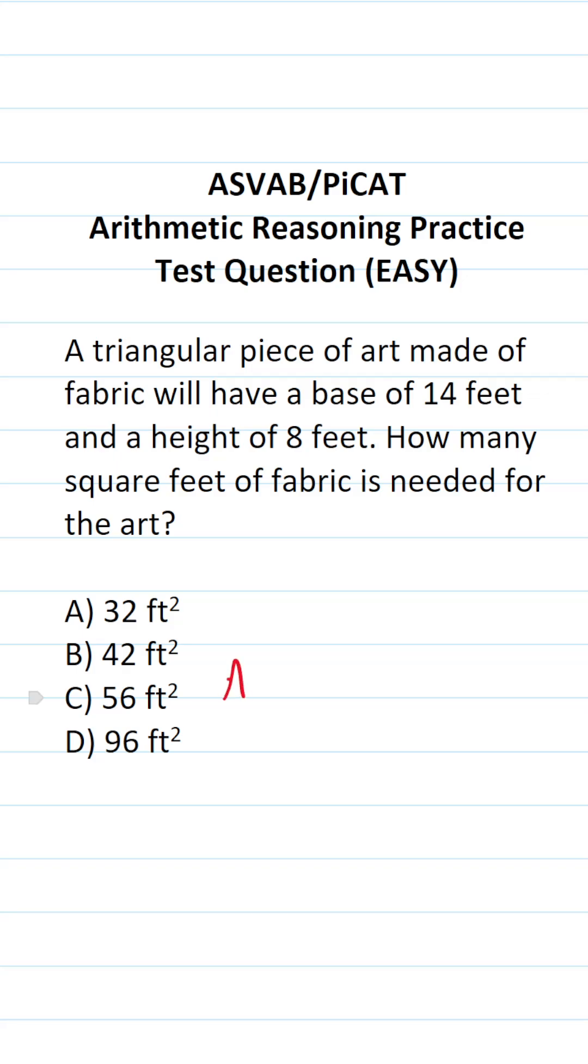In this case, we're being asked to find the area of a triangle, and that formula is simply one half base times height. Now, we weren't told what type of triangle we were looking at. That said, the formula to find the area of a triangle works for all triangles.